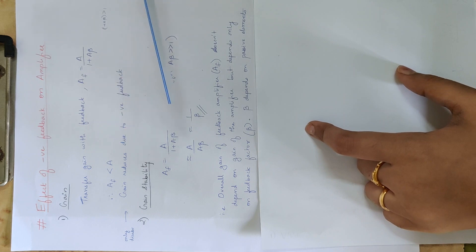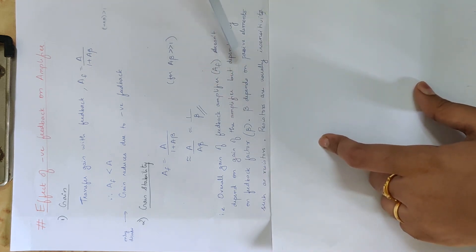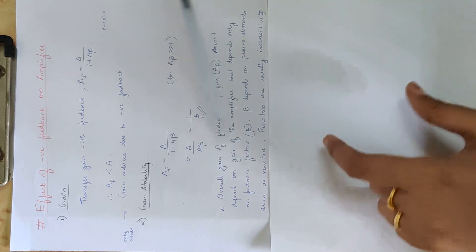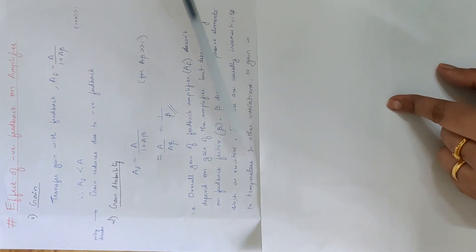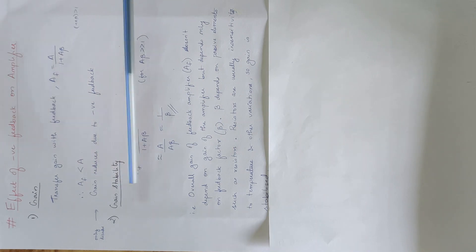The feedback network depends on components such as resistors, inductors, and capacitors — mainly resistors. Beta depends on passive elements such as resistors, and these resistors are usually insensitive to temperature and other variations. So the gain is stabilized. Temperature and other variations do not affect it. This means gain is stabilized — that is one of the advantages: gain is stabilized with negative feedback.